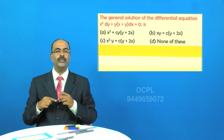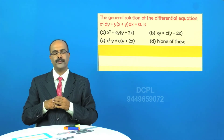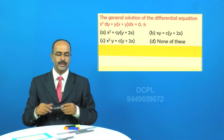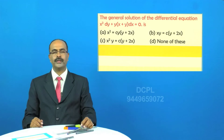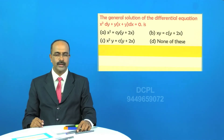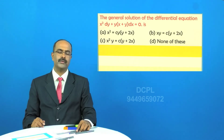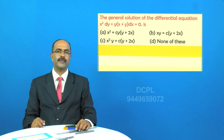Let's talk about the homogeneous differential equation solution. Whenever you are getting a homogeneous differential equation, you have to write y is equal to vx, so that dy by dx is equal to v plus x into dv by dx.